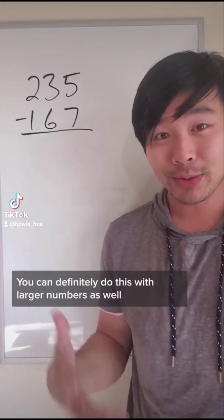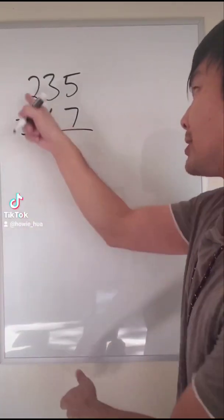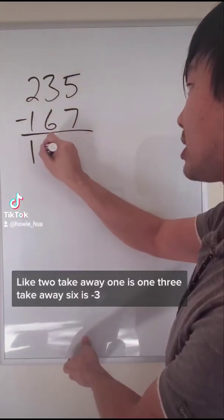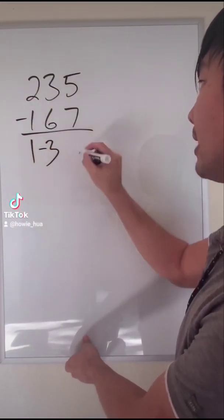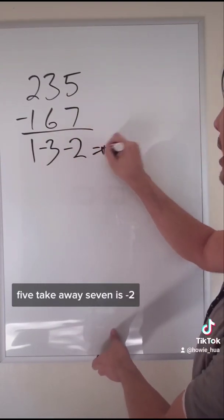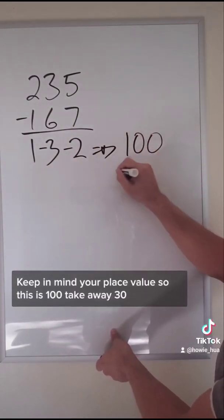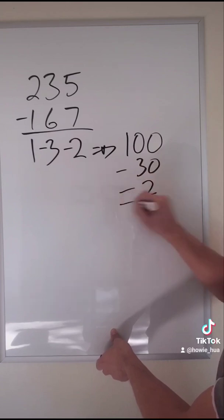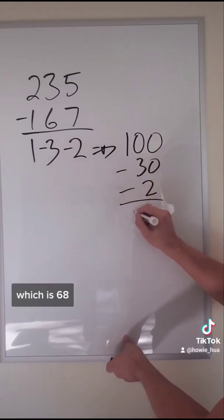You can definitely do this with larger numbers as well. Like two take away one is one, three take away six is negative three, five take away seven is negative two. Keep in mind your place value. So this is 100 take away 30 take away two, which is 68.